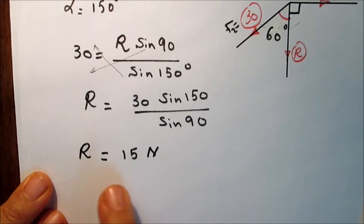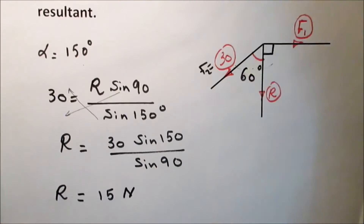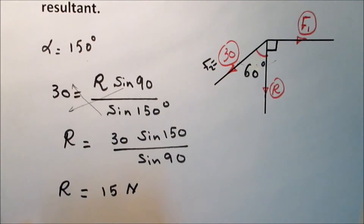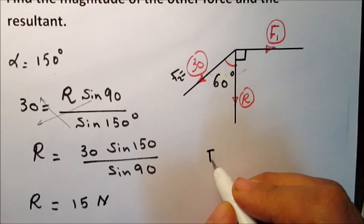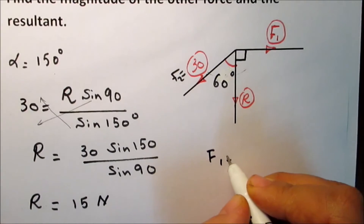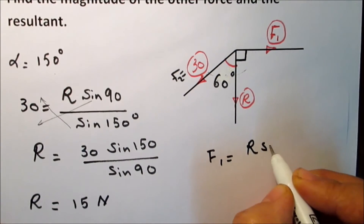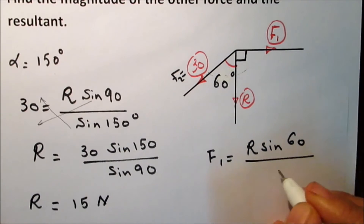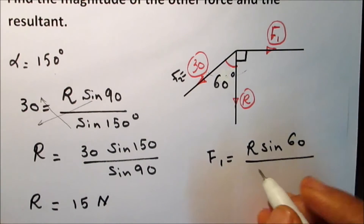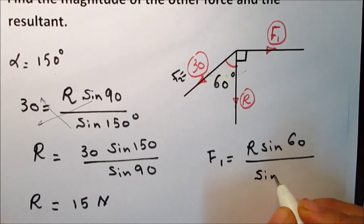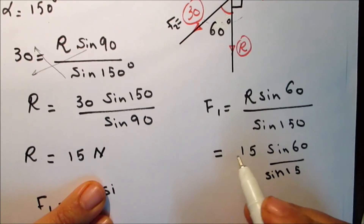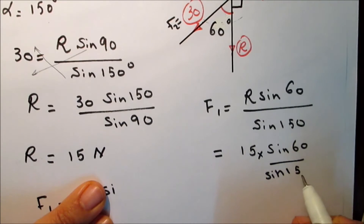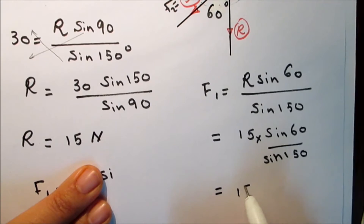So R equals 30 times sine 150 over sine 90, giving R equals 15 Newtons. To find F1, similarly: F1 equals R times sine 60 over sine 150, which is 15 times sine 60 over sine 150, giving F1 equals 15 square root 3 Newtons.